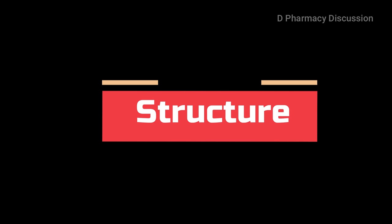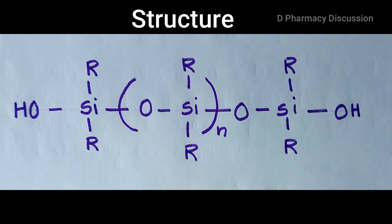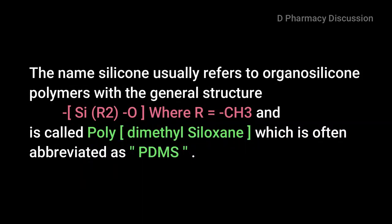The structure of silicones is as shown. The name silicone usually refers to organosilicon polymers with the general structure (SiR₂O), where R is the CH₃ group, that is the methyl group. This is called polydimethylsiloxane, often abbreviated as PDMS.